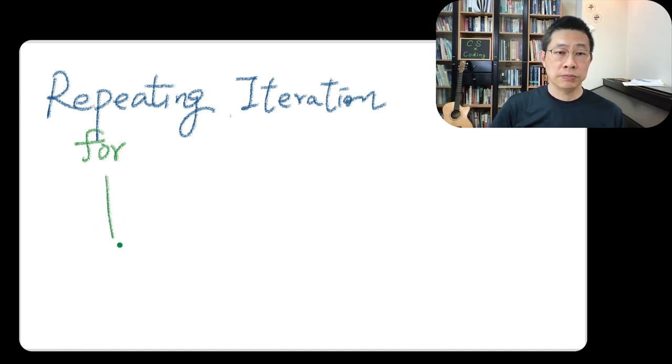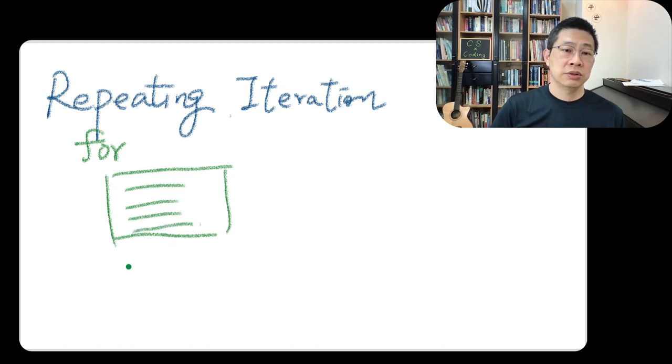we kind of use for loop to describe the behavior of it. For example, this part of the code, maybe couple lines, you want to do it again and again and again. We will use a for loop. Different languages, of course, are written slightly different. But you can see how, when you are a language designer, how you design this syntax.